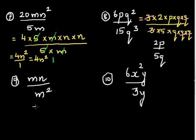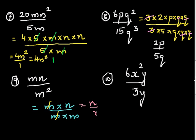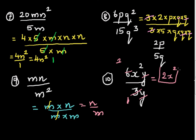For mn divided by m squared: this is m times n divided by m times m. This m and m can be cancelled, and the final answer is n over m. For 6x squared y divided by 3y: the y's cancel and 3 goes into 6 twice, leaving nothing in the denominator. So the answer is 2x squared.